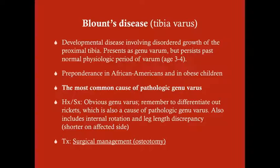Blount's disease is the most common cause of pathologic genu varum and is generally referred to as tibia varum because the actual pathology is in the tibia. This is a developmental disease involving disordered growth of the proximal tibia, presenting as genu varum that persists past the normal physiologic period.